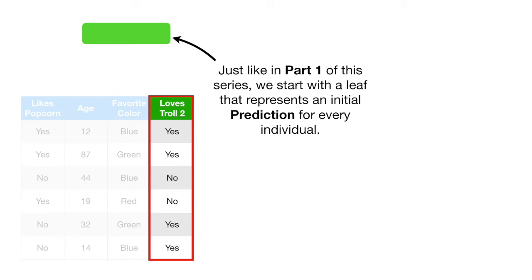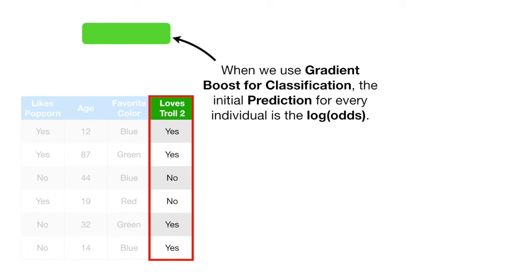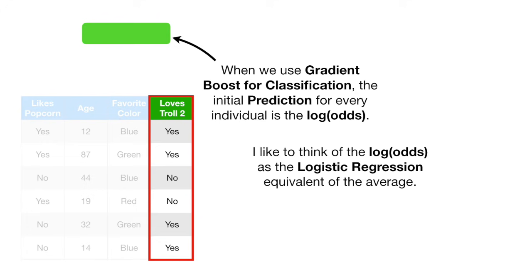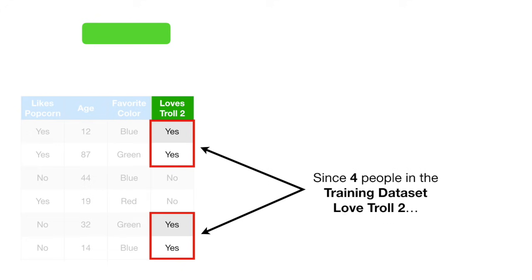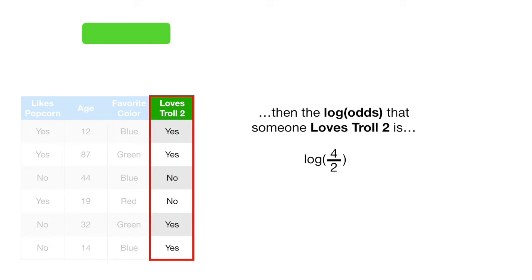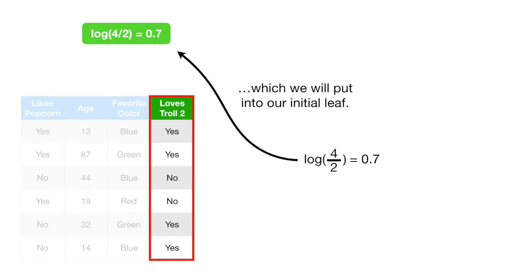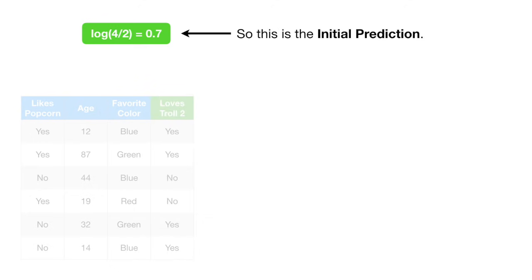Just like in part one of this series, we start with a leaf that represents an initial prediction for every individual. When we use gradient boost for classification, the initial prediction for every individual is the log of the odds. I like to think of the log of the odds as the logistic regression equivalent of the average. So let's calculate the overall log of the odds that someone loves Troll 2. Since four people in the training data set love Troll 2 and two people do not, then the log of the odds that someone loves Troll 2 is the log of 4 divided by 2, which equals 0.7, which we will put into our initial leaf.